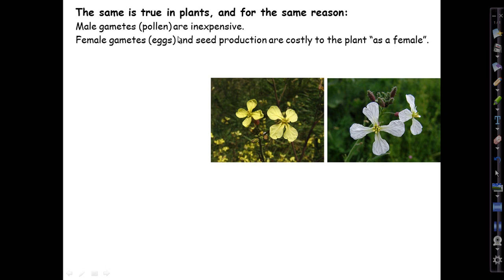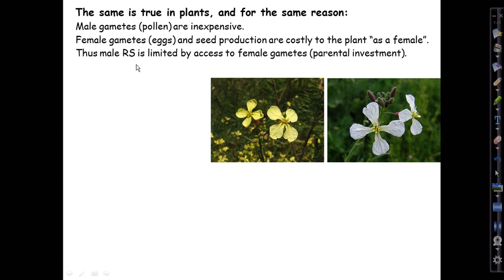This works even though many plants, especially flowering plants, often have perfect flowers — that is, they're often hermaphrodites who function both as males and females. Flowers of separate sex are actually a derived condition in flowering plants. Even in plants, male reproductive success — whether you are a male or a hermaphroditic plant acting as male — is limited by access to female gametes, that is to the parental investment the plant as female has put into making eggs and turning those eggs into seeds.